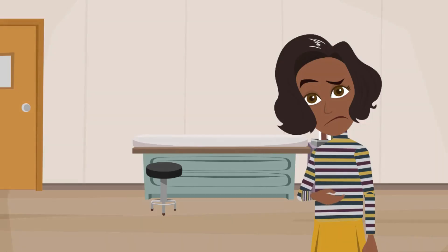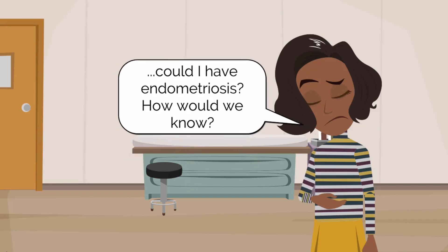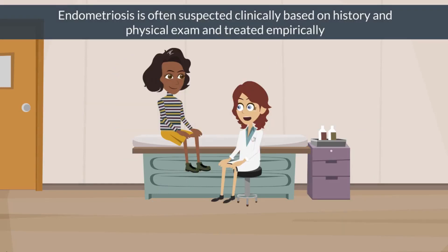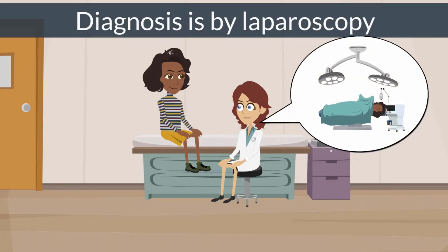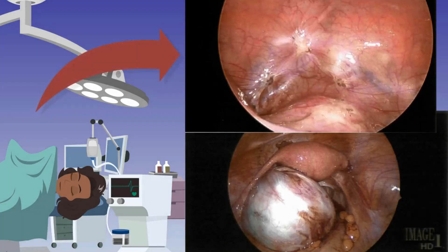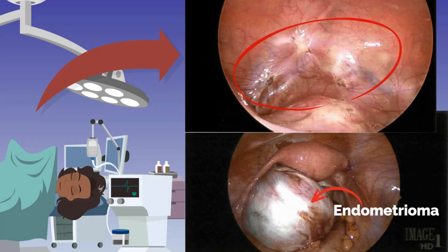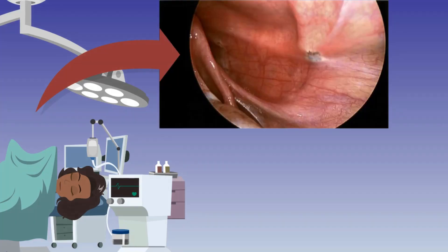Our patient wonders: could I have endometriosis? How would we know? Endometriosis is often suspected clinically based on history and physical exam, and treated empirically. However, the gold standard of diagnosis is laparoscopy. In laparoscopic images, a typical lesion can be seen, as well as an endometrioma, where there is endometriosis within an ovary. Endometriomas are also called chocolate cysts, since their contents can have a brown, tar-like appearance. Inflammatory cells break down the red blood cells in the tissue deposits, resulting in pigmented lesions.